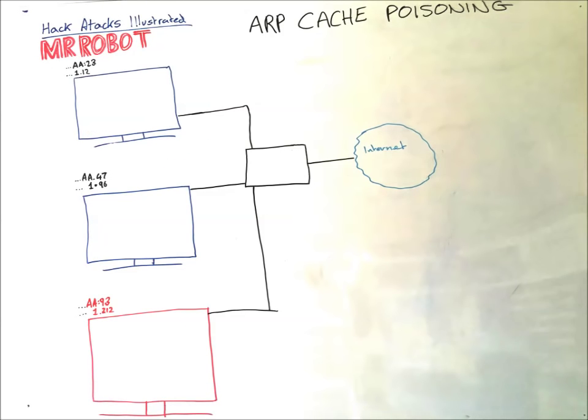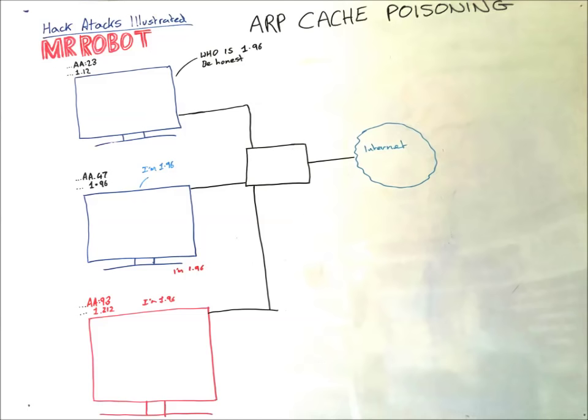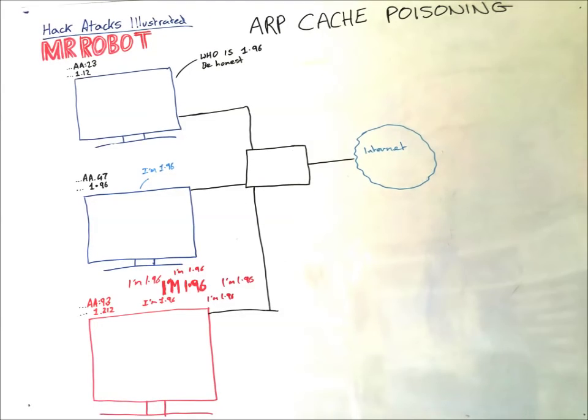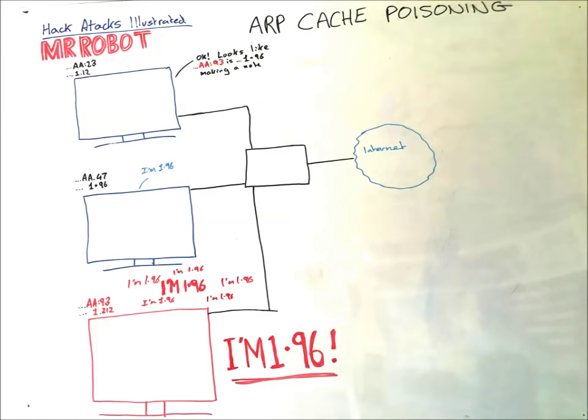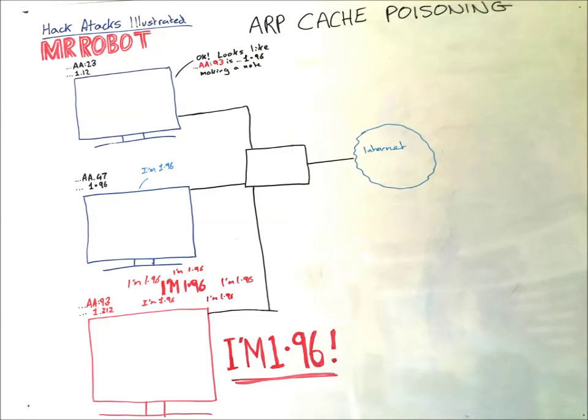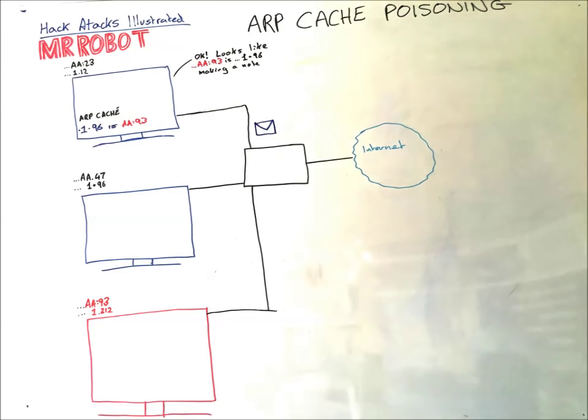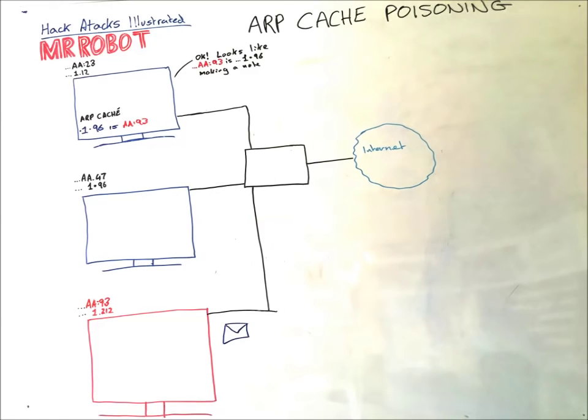The problem is it's all based on trust. The protocol is very naive. So when a first computer asks, who is .1.96? Our attacker simply lies. It shouts louder than the genuine PC, shouting, I'm .1.96. The first computer records the false information in the ARP cache. And the ARP cache is now poisoned. Any packet going to .1.96 actually goes to .1.112, our attacker.